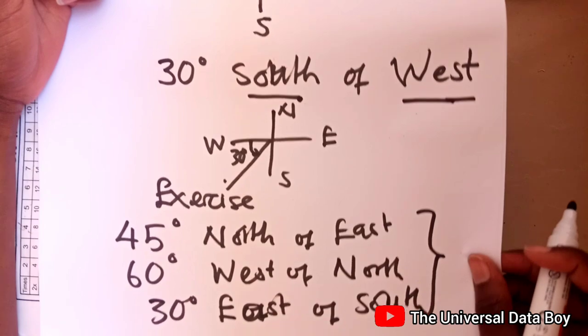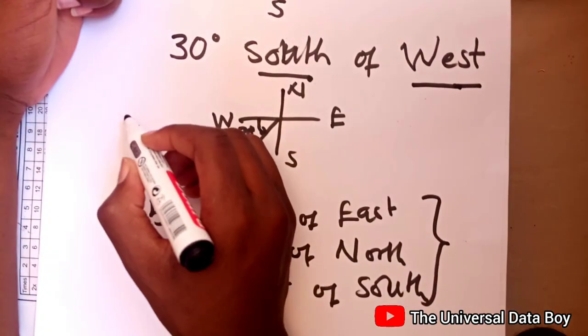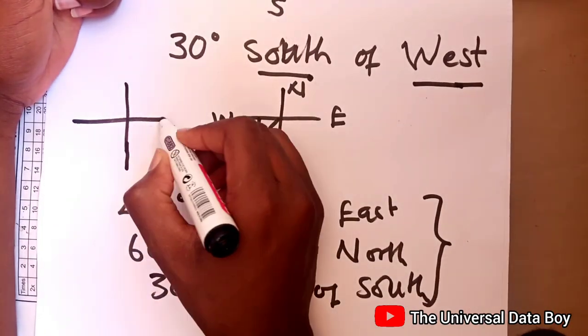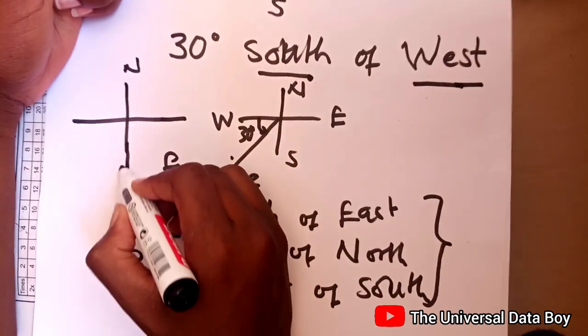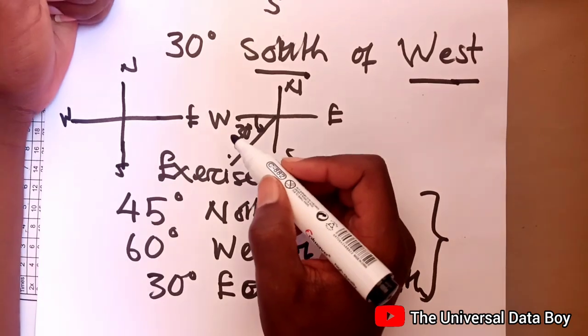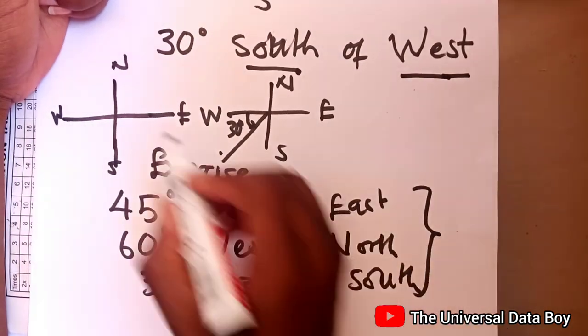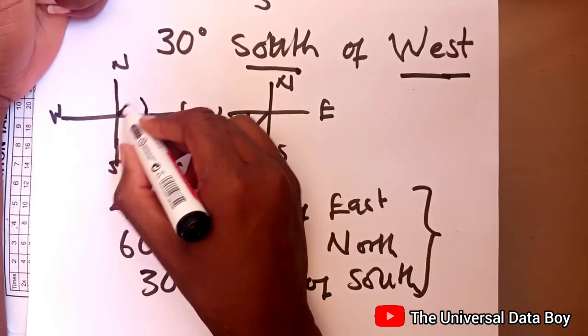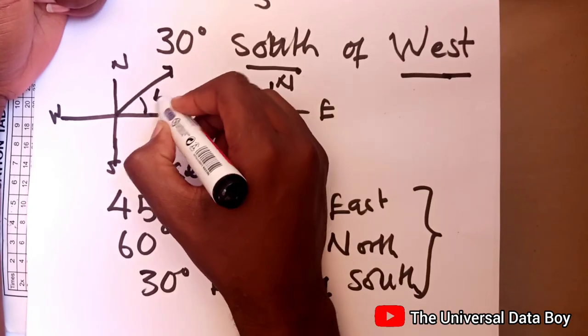So let me just draw the plane here. So I've got our north, our south, our east, and our west. So the first one is 45 degrees north of east. So we go to the east then we go 45 to the north. So that's 45.